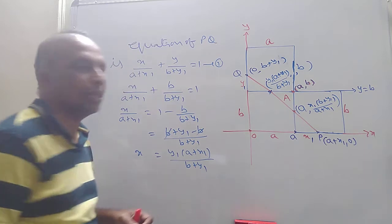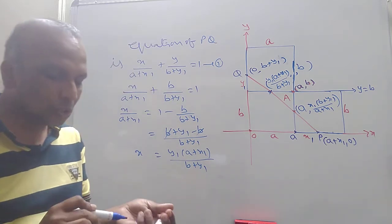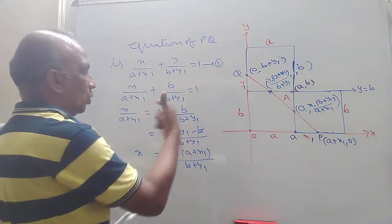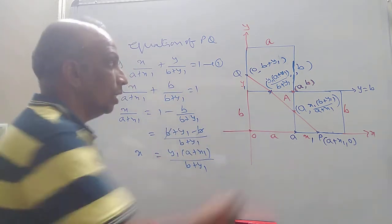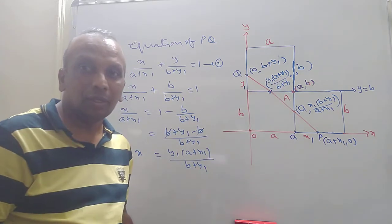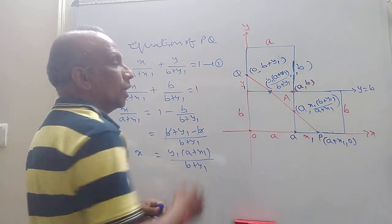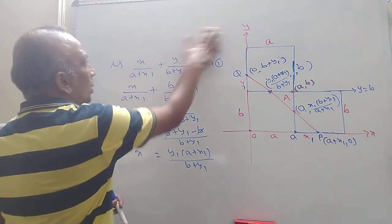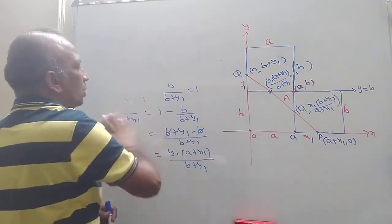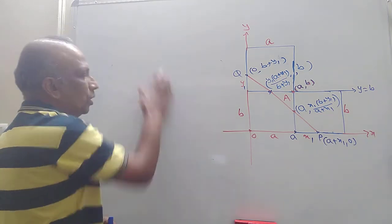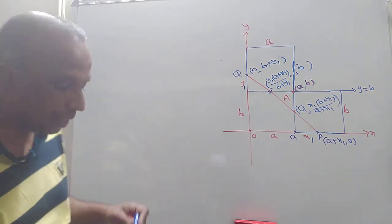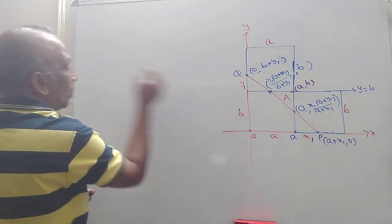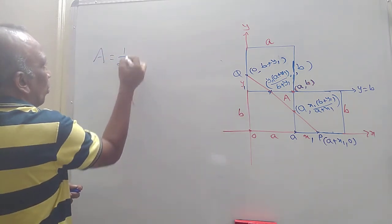I got three points. Then I can find the area of this. Because I know three points, after finding these three points, I am going to find the area of the required triangle A. This is the required triangle. Area is equal to — this A is the required area. To find the area of the triangle, I can write: area A equals one-half times the determinant with coordinates A comma B.